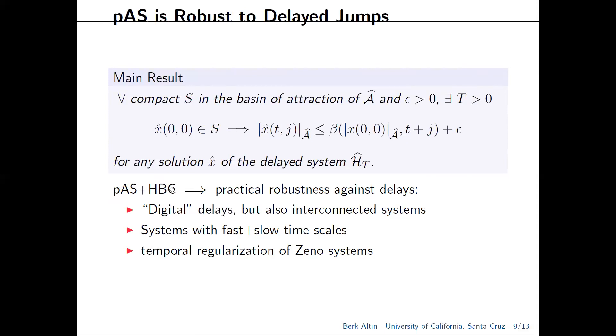This holds for what we might call digital delays, but also for interconnected systems where agents might be slow to react to each other. It's also connected to temporal regularization of Zeno systems. On a philosophical level, we also use hybrid modeling for systems with drastically different timescales. An example being mechanical systems with impacts, where the duration of impact is normally non-zero but we model them to be immediate using hybrid dynamics. In that sense, there's a nice continuous dependency between impact durations and the precision of your model.